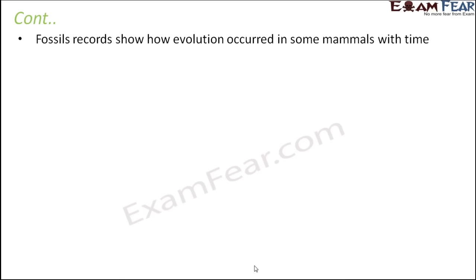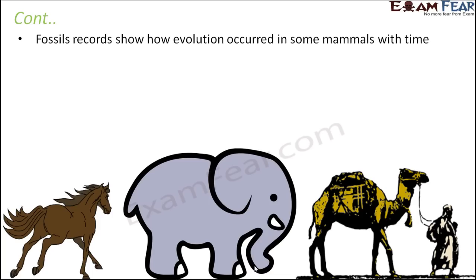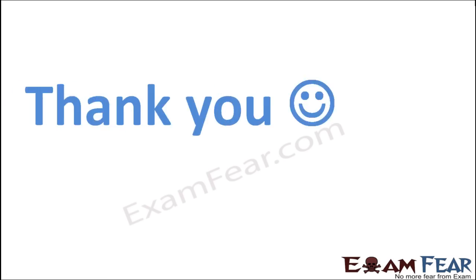Fossil records show how evolution occurred in some mammals with time. For example, if you look at mammals like horse, elephant, or camels, we see that over a period of time their evolution occurred gradually. When the horses evolved, they did not just evolve like the way we see them today - the evolution was quite gradual. Gradually some of the features got changed and finally we see it how we see it today. This is how fossils tell us that evolution had taken place, that organisms were related to each other, and one organism came from another organism. There was an evolutionary relationship existing between different organisms.